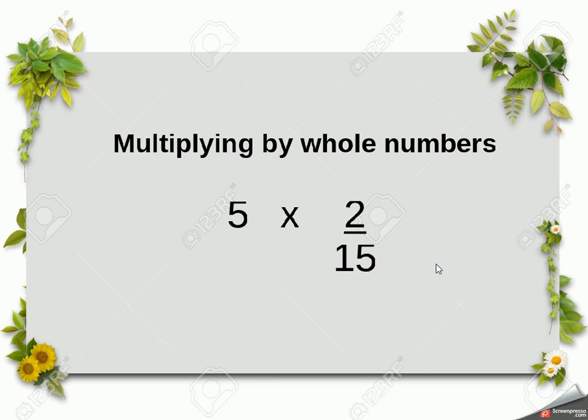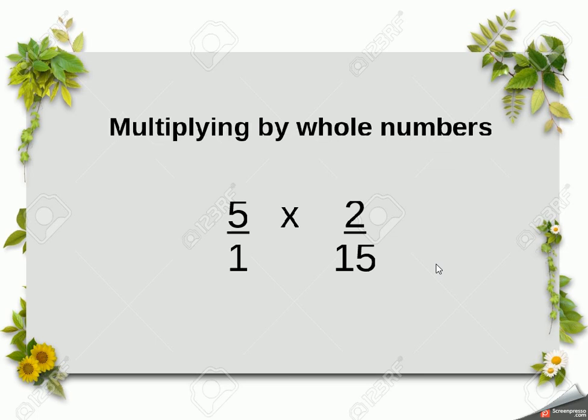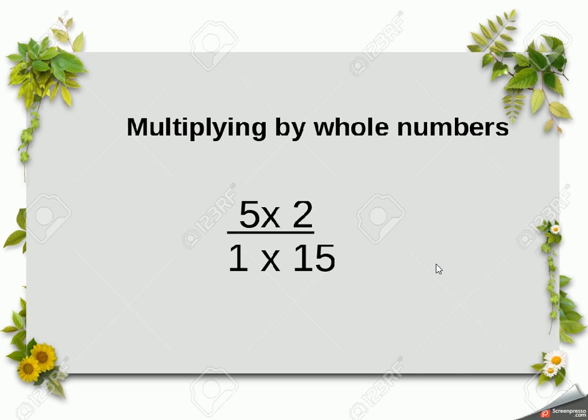When multiplying by whole numbers, we simply multiply the top by the whole number. In a sense, we're doing exactly the same thing, because actually there's a hidden 1 underneath the whole number. 5 over 1 is actually 5. We don't normally write that 1 in. But in a sense then, we're doing the same thing, multiplying the tops and multiplying the bottoms, because we're essentially just doing 5 times 2 on the top, and 1 times 15 on the bottom.